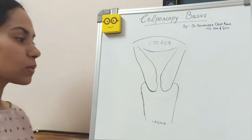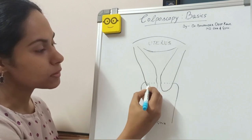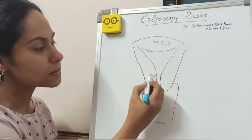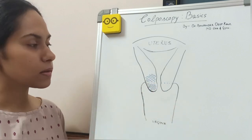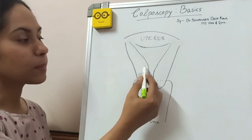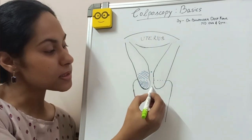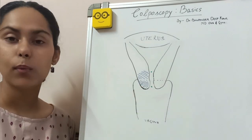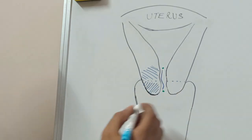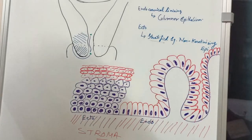The cervix has two parts. The part that is inside the vagina is known as the portio vaginalis, and the part above it is known as the supravaginal cervix. The cervix has two openings: one towards the uterus, known as the internal os, and the external os where the cervix communicates with the vaginal cavity. The part between the internal os and the external os is known as the endocervix, and the part outside the external os in the vagina is known as the ectocervix.